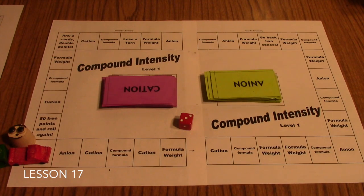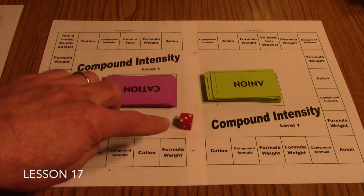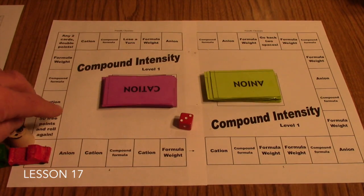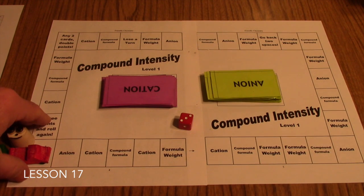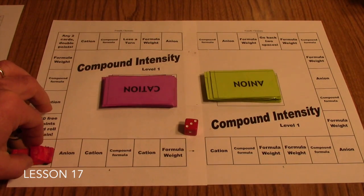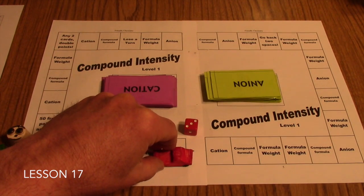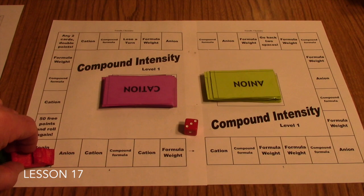Your students can play in teams for this game, or if you have a few students, they can each play on their own. We recommend having no more than two students per team. On the game board, there are basically four different types of spaces that you can land on. Play will begin with the team rolling the die and then landing on a particular space. Let's look at the different spaces you can land on.